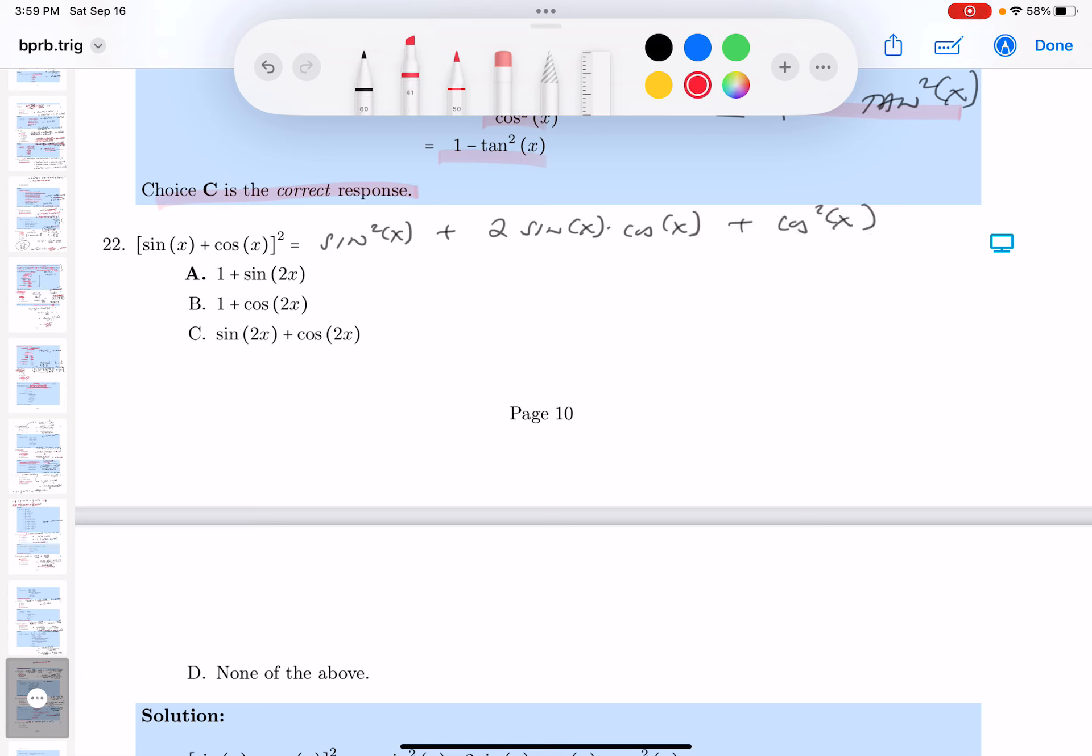Immediately what I notice, sine squared plus cosine squared is 1. So that gives us 1 plus 2 sine x cosine x.